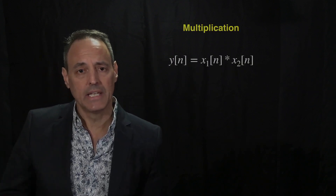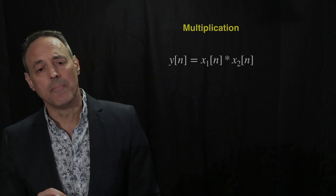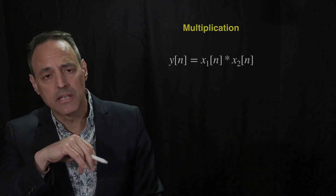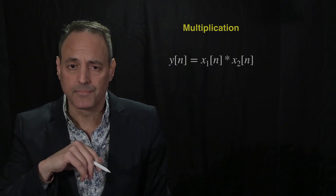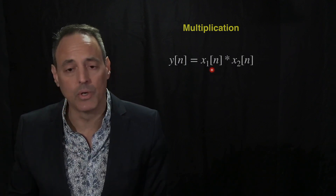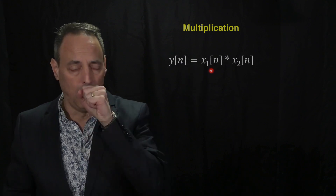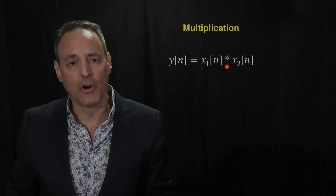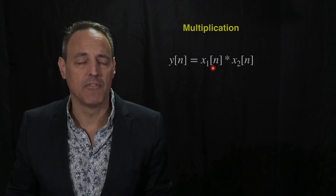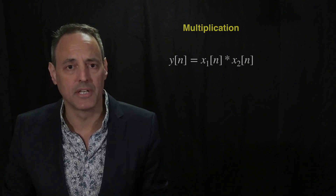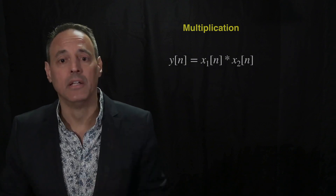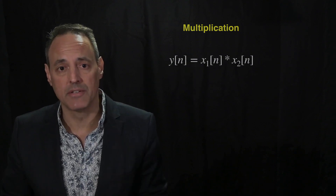That covers convolution — the same important property we saw for solving problems in the continuous case. Now we want to talk about multiplication. Multiplying two signals is a very interesting concept: you take one signal and multiply it by a second signal with the goal of using the second to modulate the first in some advantageous way. This is a very common signal processing technique.